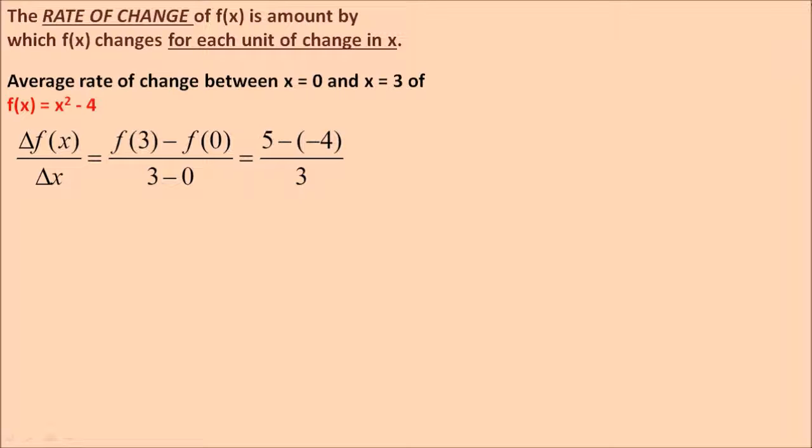f(3) - f(0) is the change in f(x), and 3 - 0 is the change in x. f(3) is 5, that's 3² - 4 is 5. f(0) is negative 4. It's minus negative 4, so be careful with that. Make sure you don't ignore this minus sign. You need them both. And so our answer is 9 over 3, which is 3.